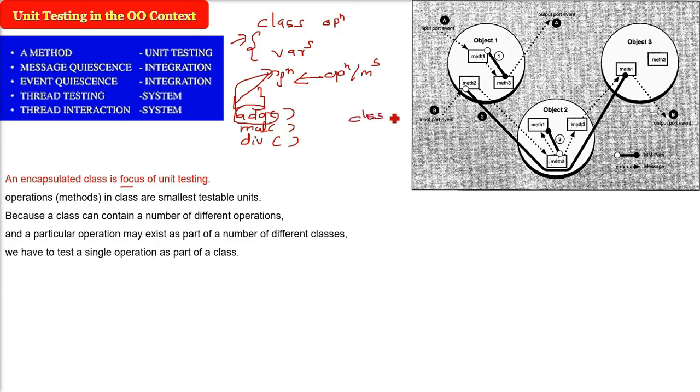For example, if you have a class 2 and you have an add function here also, this add function has to be tested in the context of class 2, and the first one add has to be tested in the context of operation or the class 1. So this is the main scenario here. Let me give an example to make it more clear.